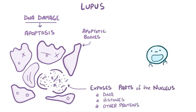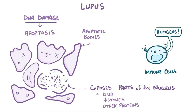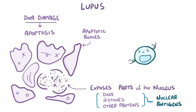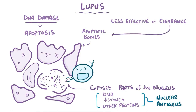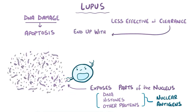With lupus, the immune system is more likely to think that the cellular parts are foreign, or antigens. Since they're from the nucleus, they're referred to as nuclear antigens, and immune cells try to attack them. Additionally, individuals with lupus have less effective clearance, meaning they aren't as good at getting rid of these apoptotic bodies, so they end up having more nuclear antigens floating around.